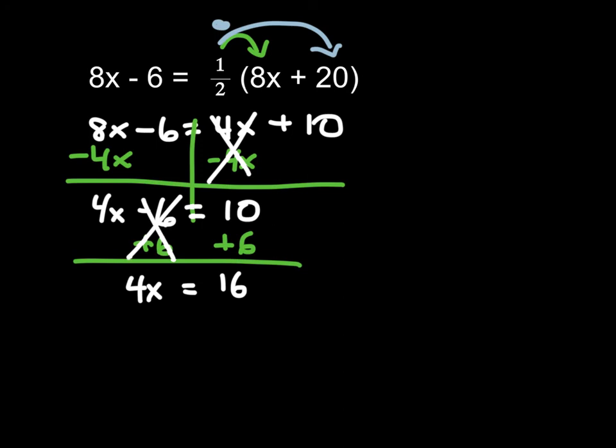So 4 times what value equals 16? Well, 4 times 4 is 16, so we know x is 4. Another way of showing it is dividing both sides by 4. 4 divided by 4 makes 1, so we get x equals 4.